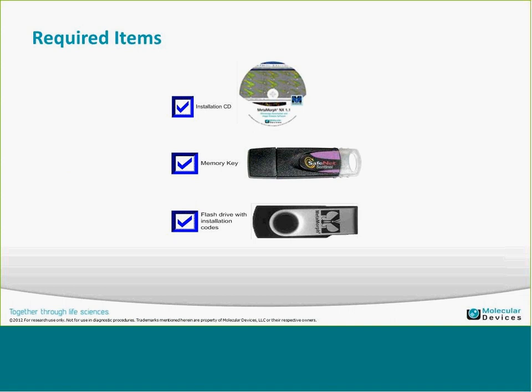Required items: you'll need the installation CD — and CD is in quotes because it's somewhat relative now. It doesn't have to be on a disk; it can be on a thumb drive or a folder on your hard drive. You'll need a memory key, which is the same key used for Metamorph for Olympus — it uses a different section of the system key. You can have both Metamorph for Olympus and Metamorph NX installed on the same system using the same key.